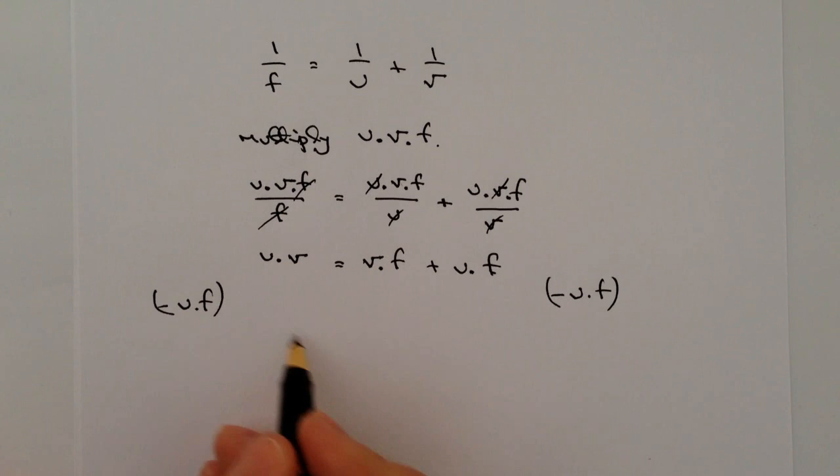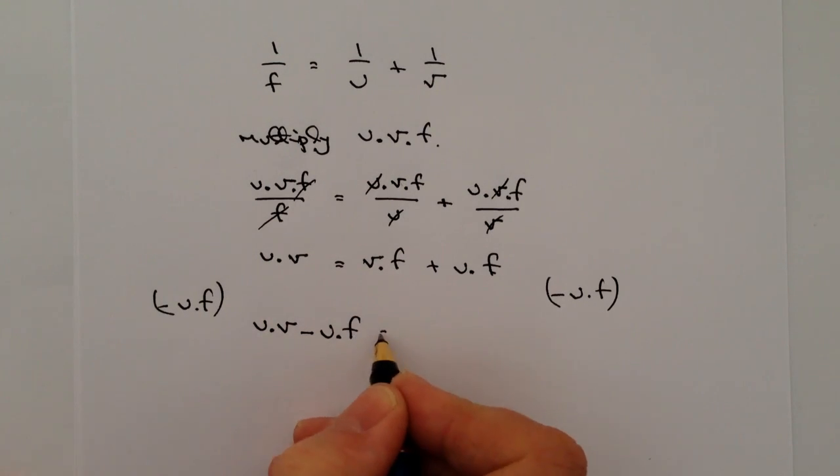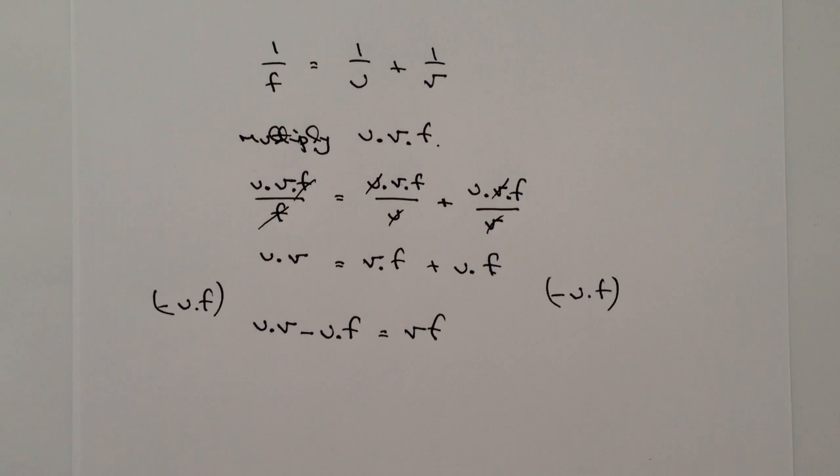It means that on this side of the equation I get uv minus uf and that equals vf. It's then just a case of factorizing this through, so I'm going to take out the value of u, which means it's u times (v minus f) equals vf.